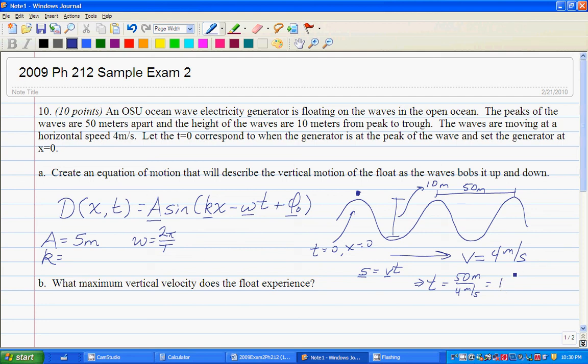So that means that the time must equal 50 meters divided by 4 meters per second, which is going to equal 12.5 seconds. So that means omega is going to equal 2 pi over 12.5 seconds. And I don't care on an exam if you number crunch that or not, just showing that's fine.